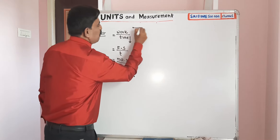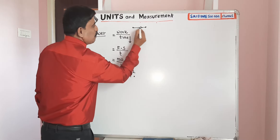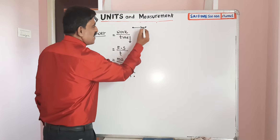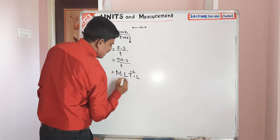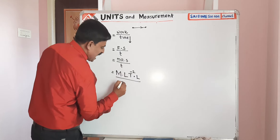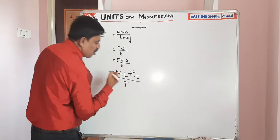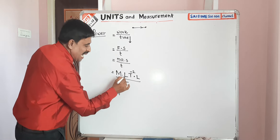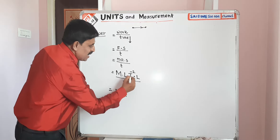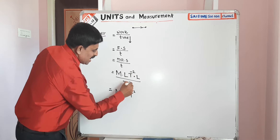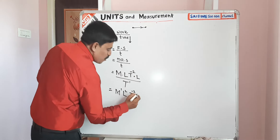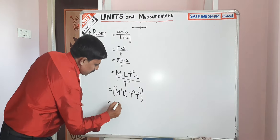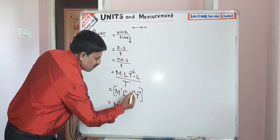S represents displacement, which is nothing but the shortest distance between two points — length only. S means length, by T means time. Time dimensional formula is capital T. So we write: M power 1, L into L gives L square, T power minus 2. Here T power plus 1 comes to the numerator giving T power minus 1.